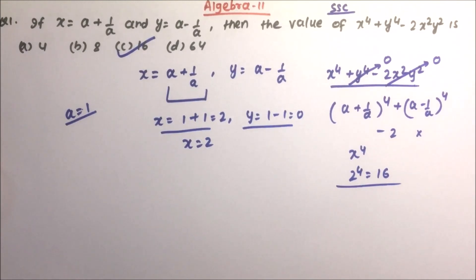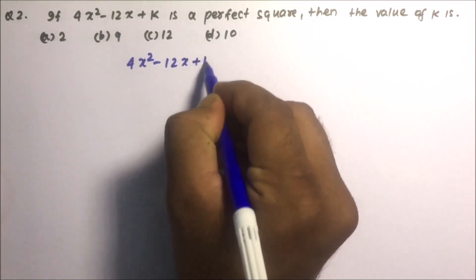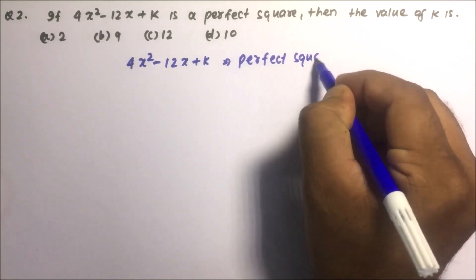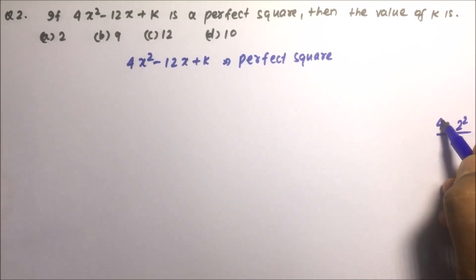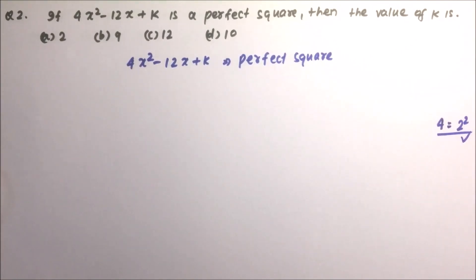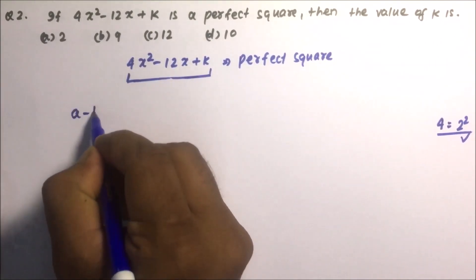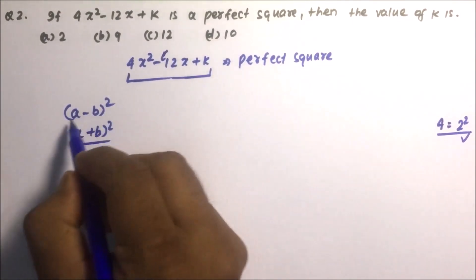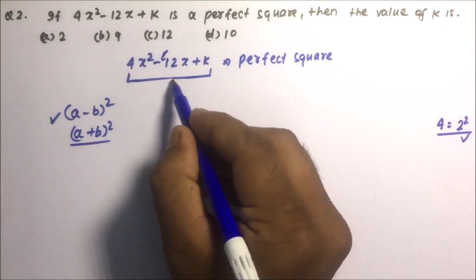Moving towards question number 2: if 4x² - 12x + k is a perfect square, what is the value of k? Note that 4 is a perfect square because 4 = 2². Looking at the equation, since it has a minus sign, it resembles the form (a - b)², so we try to bring this equation into that format.